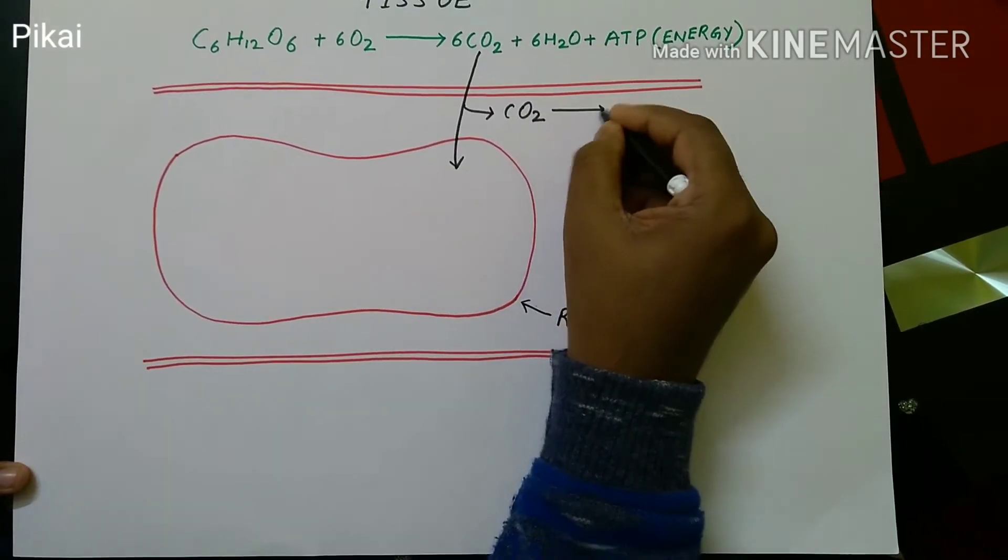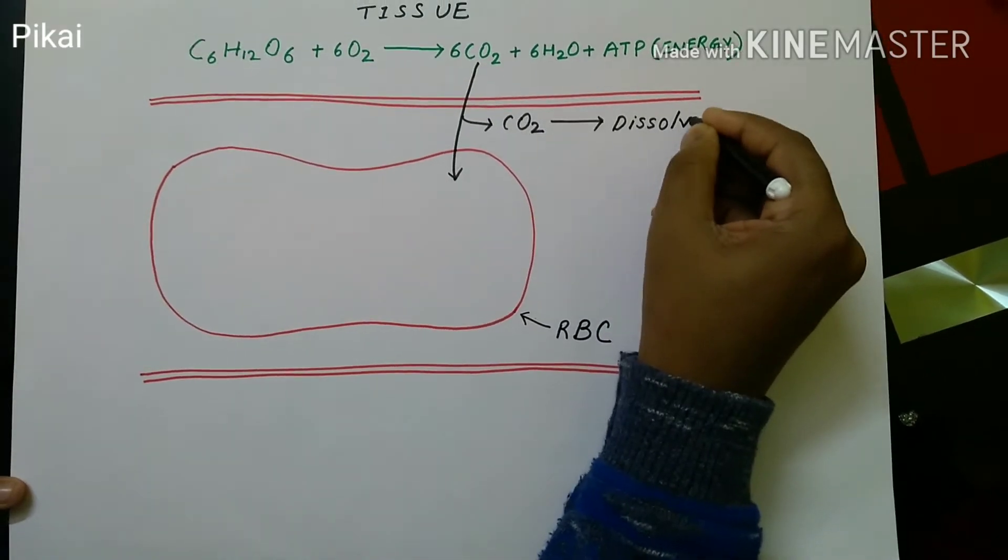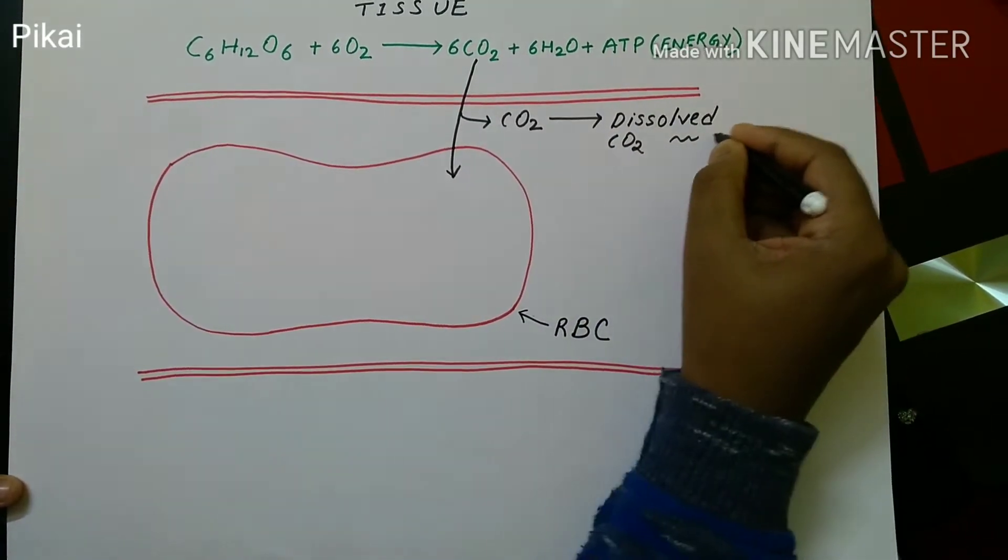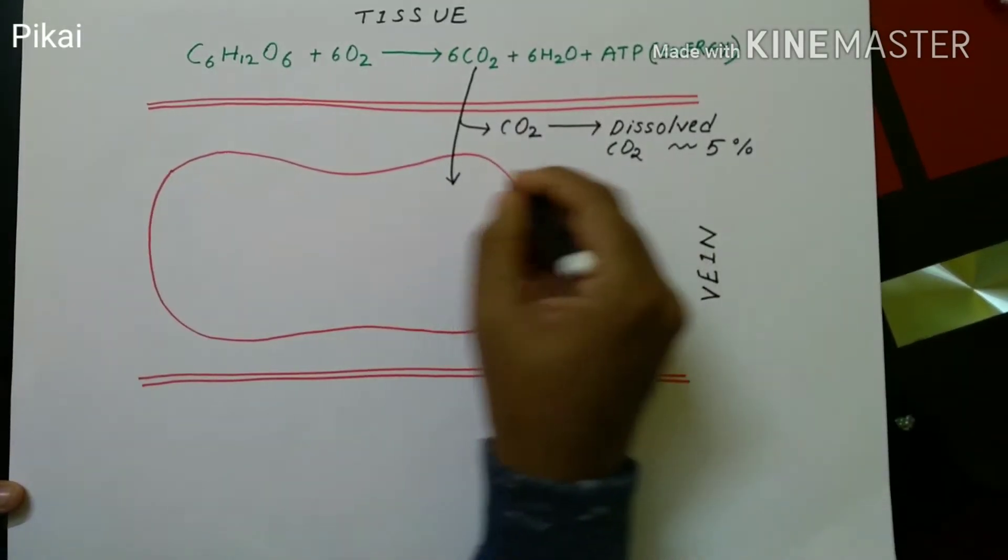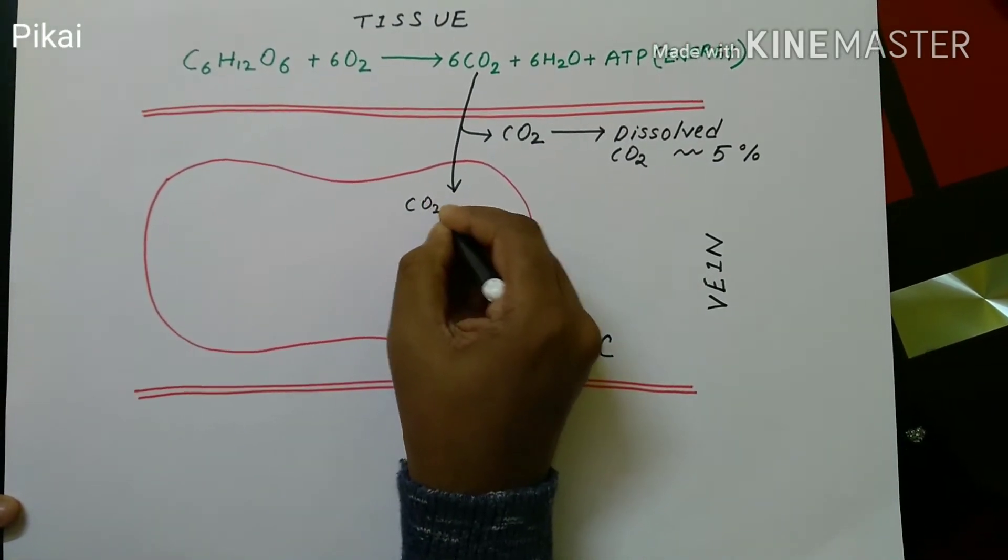So CO2 diffuses out from the tissue in the vein where it dissolves in the blood plasma. The portion that dissolves in blood plasma is very few, nearly about 5%. But most of it, more than 70%, forms bicarbonate ion and some of it, the rest of it,